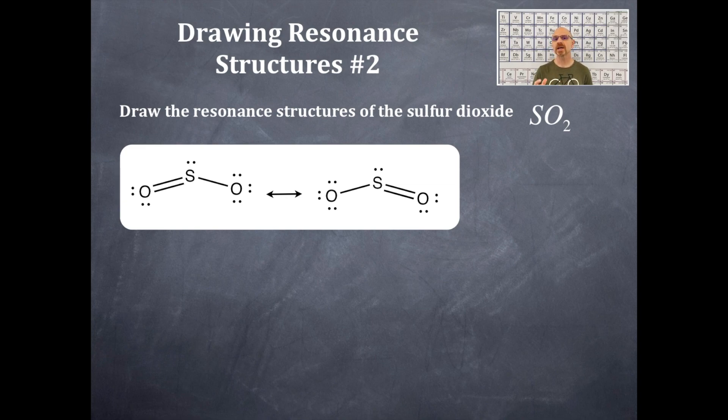You always have to draw double-headed arrows in between these. Now, on this one, I don't have brackets and a charge because this is a molecule without a charge. It is not an ion. So it does not need the brackets, but it most certainly does need the double-headed arrow to designate that these are resonant structures and they are equivalent structures.